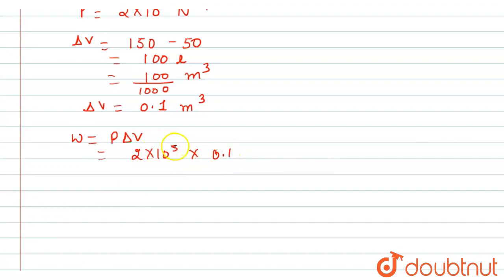this will be, this point, because of this point there is a one zero will be cancelled from this and we get an answer 2 into 10 raised to power 4. And this is in a joule because of a